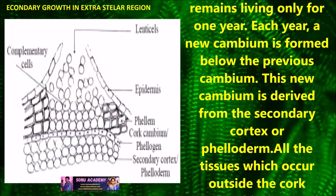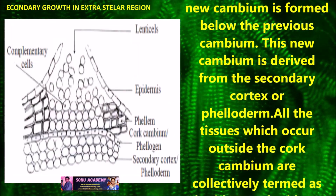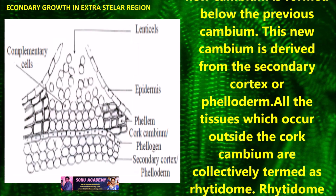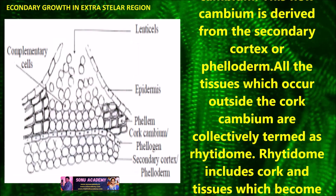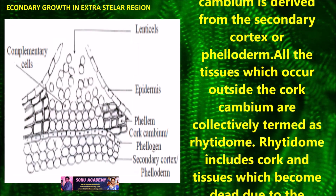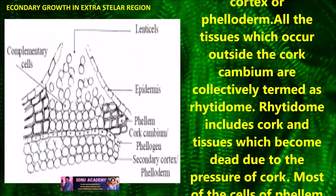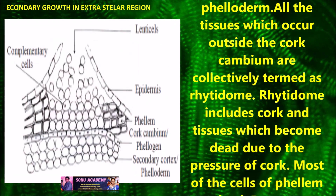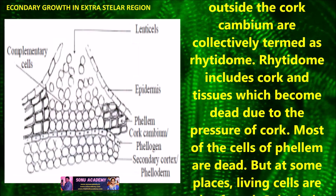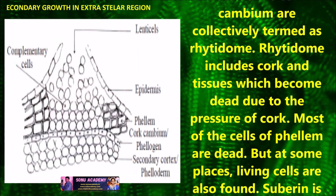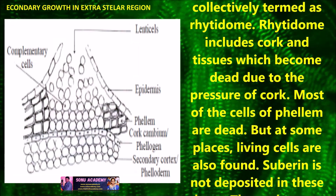This new cambium is derived from the secondary cortex or phelloderm. All tissues which occur outside the cork cambium are collectively termed as ritidome. The ritidome includes cork and tissues which become dead due to the pressure of cork.